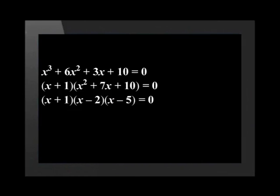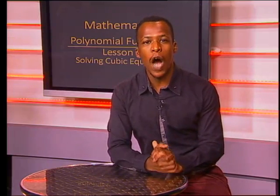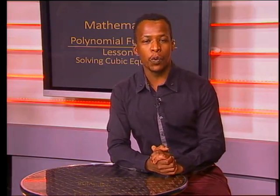This means that the trinomial is x squared minus 7x plus 10. The next step is to factorize the trinomial. Therefore, (x plus 1)(x minus 2)(x minus 5) is equal to 0. And x is equal to negative 1, or x is equal to 2, or x is equal to 5. Now let's join Tebuho and his teacher as they go through how to solve for the unknown in a cubic equation.